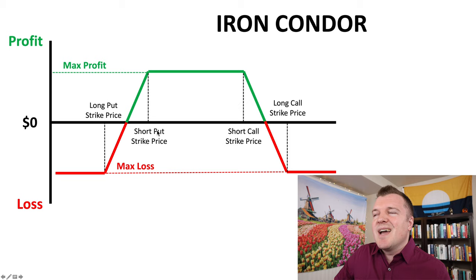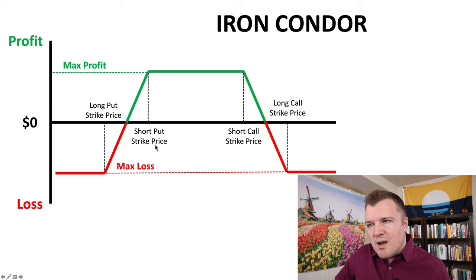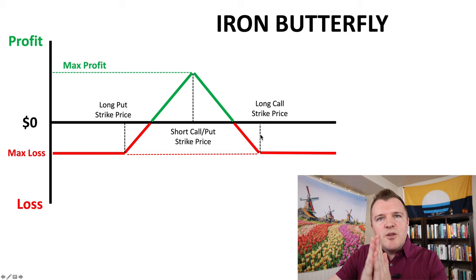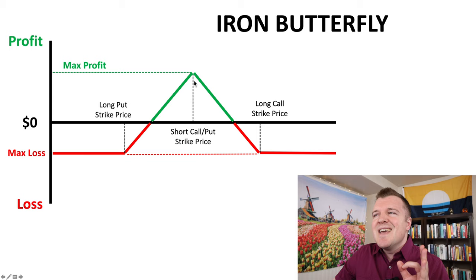They're very similar in that with an iron condor your short call strike price and your short put strike price are spread wide apart, but with an iron butterfly you're going to bring them together to maximize the amount of premium you're collecting in the center.